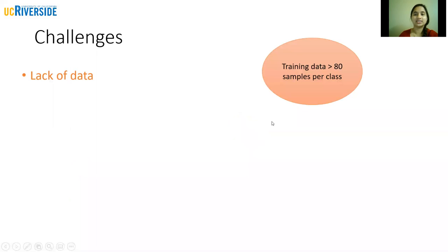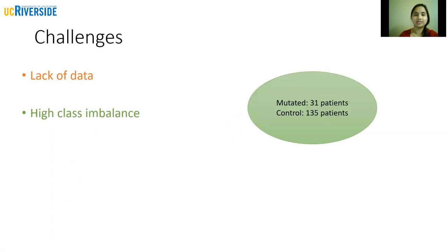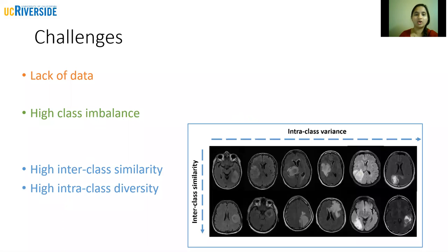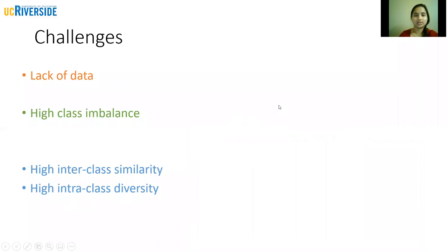The main challenges of the dataset is that it's a very limited dataset, there is a high class imbalance, as well as a high level of inter-class similarity and intra-class diversity.